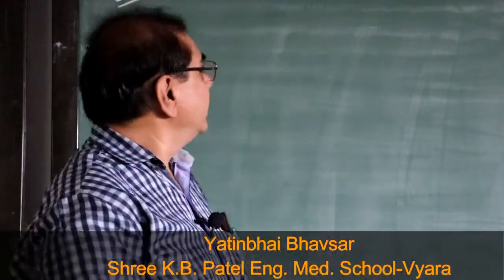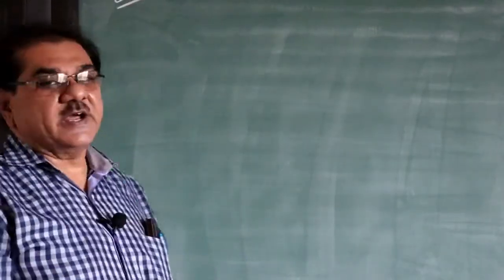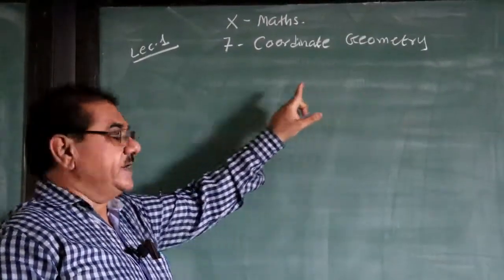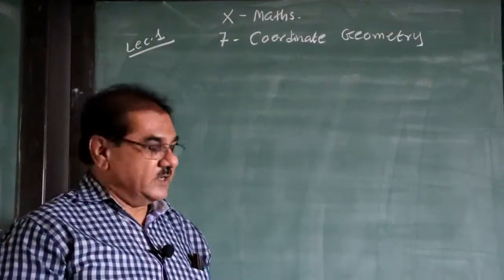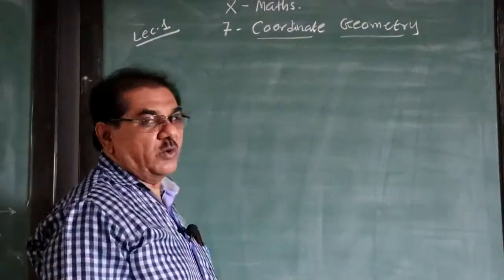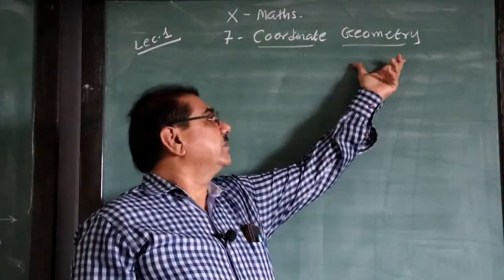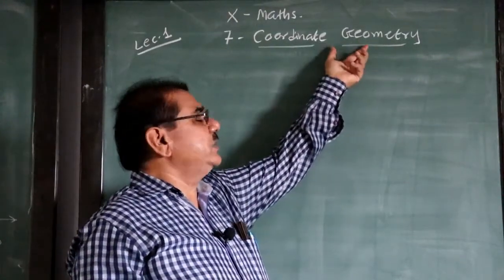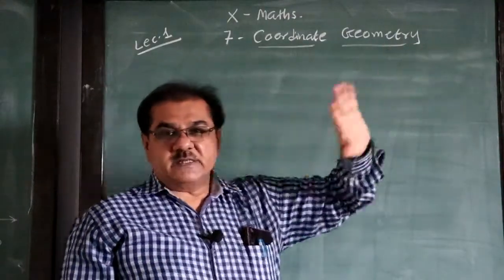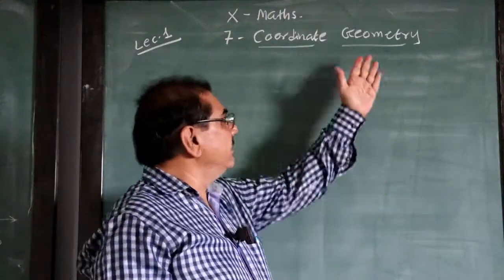Hello friends, in standard 10 maths today we take a new chapter — chapter number 7, coordinate geometry. It is my first lecture in this chapter. First of all, let us understand the meaning of coordinate geometry. Geometry we know from early standards: geo means earth or any object on the earth, and matri means a process of measuring. So any structure we measure, we call it geometry.